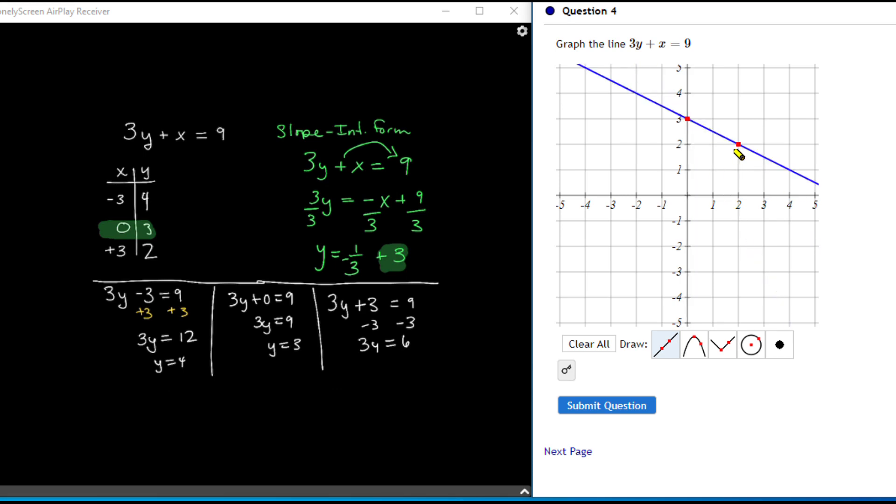You'll notice that's one of our points that we found. That is our point 3, 2, which we also found when we were doing this by hand. So both of those work and both methods will give you the same answer.